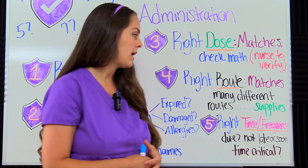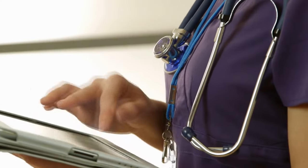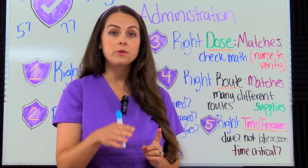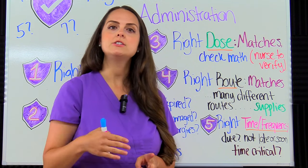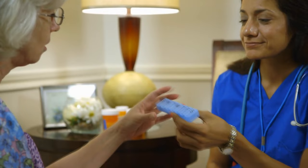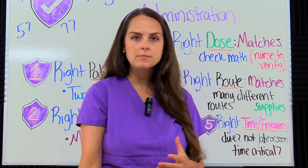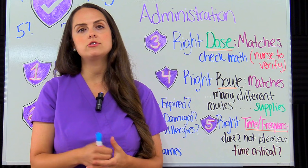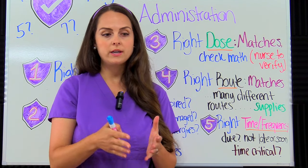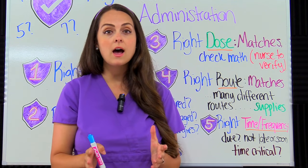Next is the fifth right: the right time and right frequency. Before giving a medication, look in the MAR to see when it was last given — especially for PRN as-needed medications — and make sure the frequency matches the original order. Ensure the medication is due and you're not giving it too late or too soon. Pay close attention to time-critical medications like antibiotics, anticoagulants, and insulin. Review your hospital's policy because it will outline the acceptable time frames for administration.